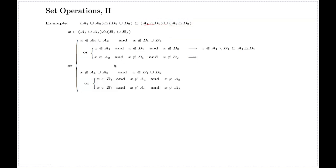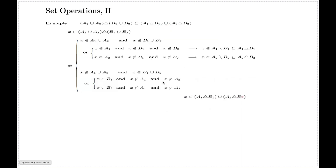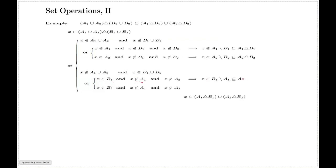Similarly, X belongs to A2 and doesn't belong to B2 means X is in the regular set difference of A2 and B2, and by implication in the symmetric difference, and further in the union. The first two branches lead to the conclusion that X belongs to the right-hand side. The other two branches lead to the same conclusion: X belongs to the set difference of B1 and A1, which means X belongs to the symmetric difference of A1 and B1, and thus belongs to the union.